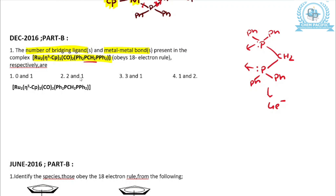Ruthenium has valence electrons 8. There are 2 ruthenium, so 2 × 8 = 16. You are having η5 CP — there are 2 CP, so 2 × 5 = 10. Then you are having 2 CO, so 2 × 2 = 4. And then you are having this bridging ligand which we have already calculated to be a 4-electron donor. So the total is 34 electrons.